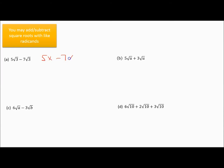This first problem really compares to doing something like 5x minus 7x — it's like like terms. The 5 is the coefficient of x and the negative 7 is the coefficient of x, and that would give you negative 2x. Same story here: 5 square root of 3 minus 7 square root of 3 gives me negative 2 square root of 3.